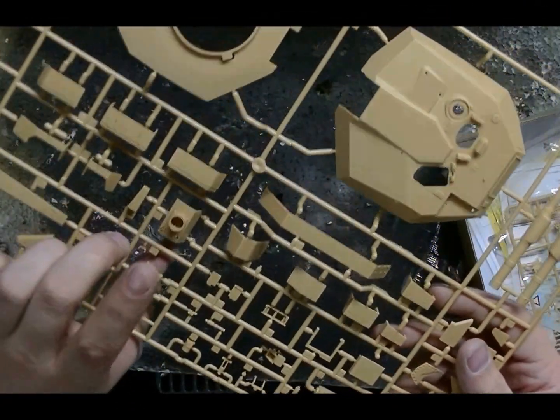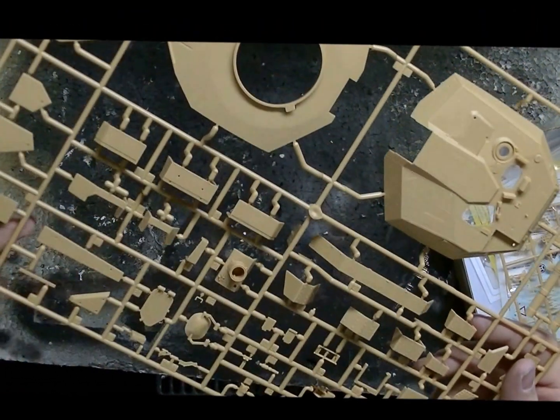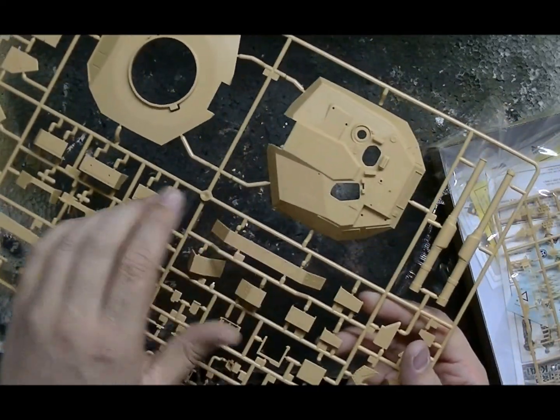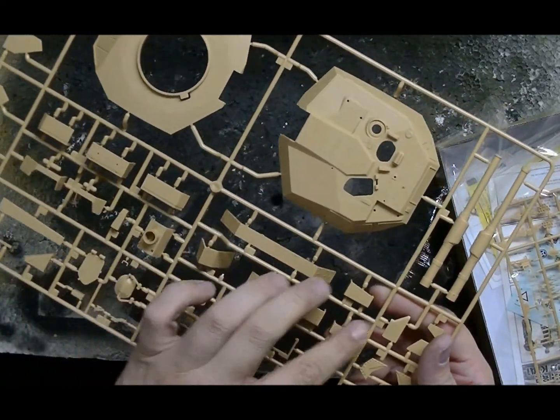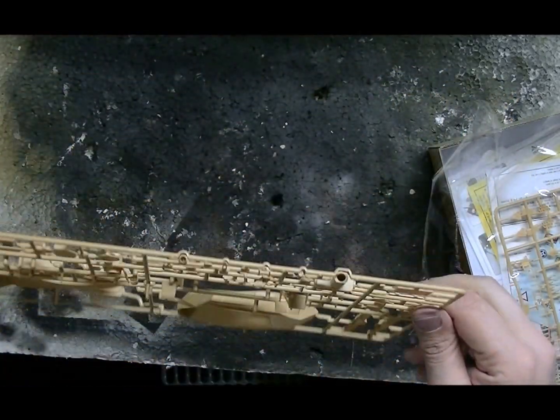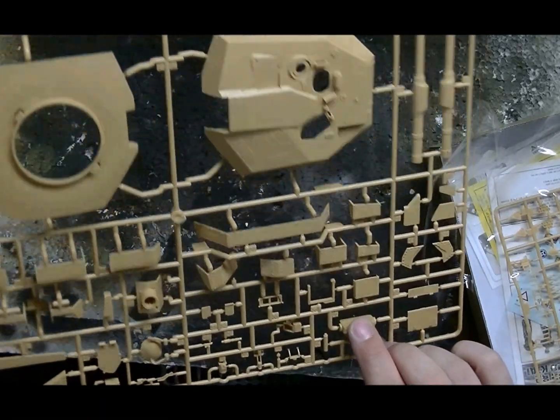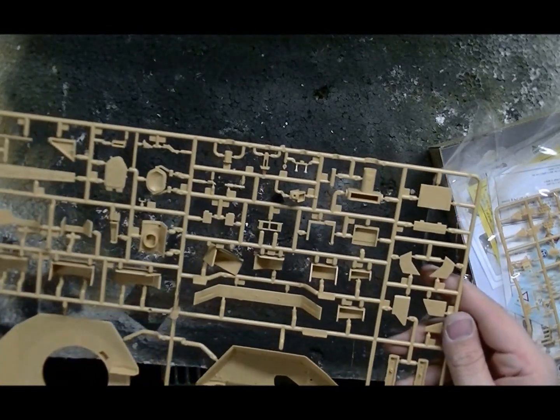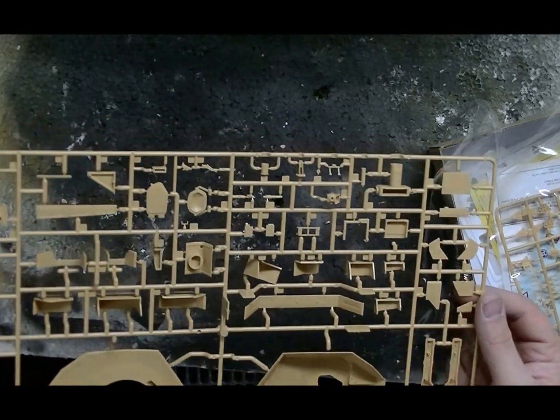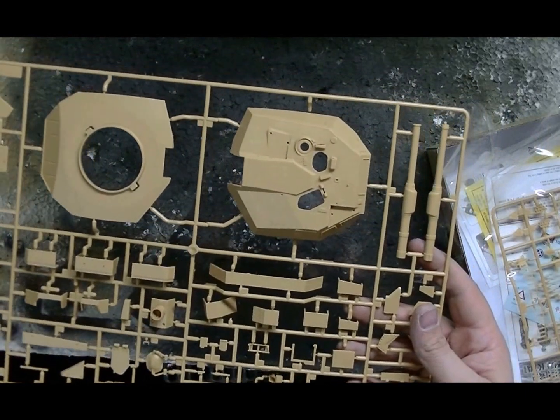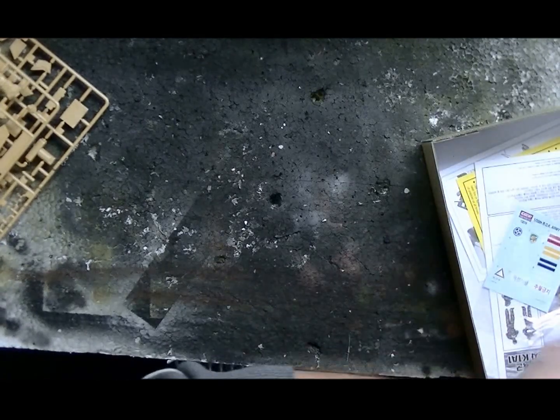Gun mantlet, hatches. Extra armor, I'm guessing that this will be the back side, the turret baskets. Stuff, don't really know what this is. Looks also be a part of the gun but I'm not sure. But again no flash so far, no warping of the sprue so that's nice.